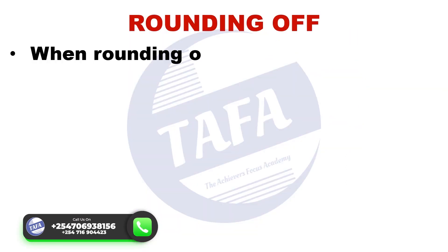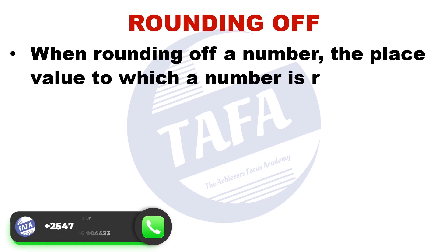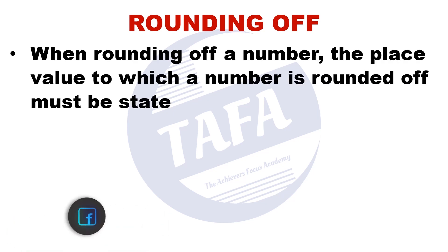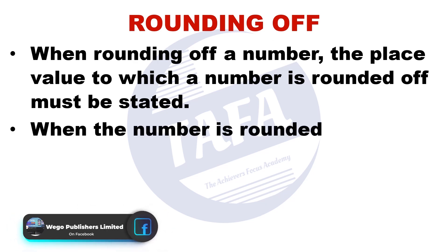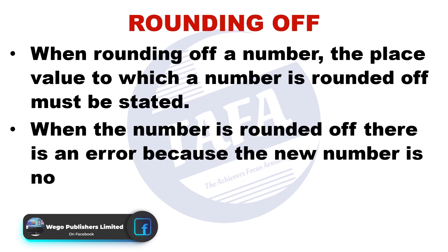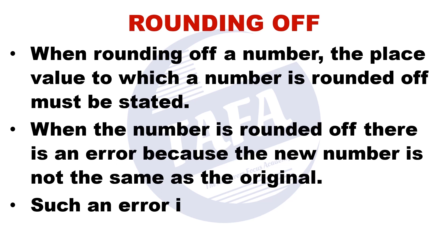Now, rounding off: when rounding off a number, the place value to which a number is rounded off must be stated. When the number is rounded off, an error is introduced because the new number is not the same as the original number. Such an error is called a rounding off error.